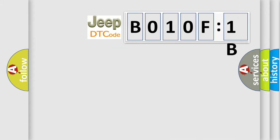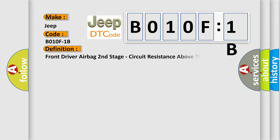So, what does the diagnostic trouble code B010F1B interpret specifically for Jeep car manufacturers? The basic definition is Front driver airbag second stage, circuit resistance above threshold. And now this is a short description of this DTC code.